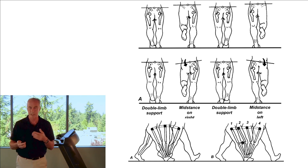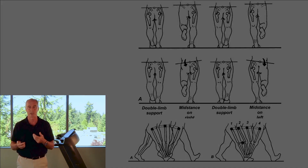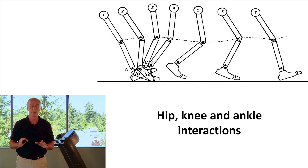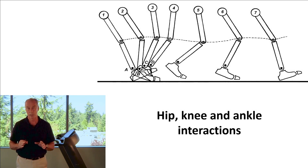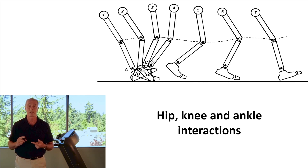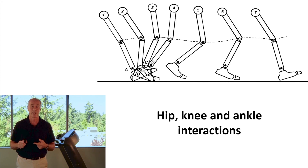So pelvic rotation in the frontal plane and knee flexion in the sagittal plane are very important. From Inman, Ralston, and Todd's book on human walking, ankle kinematics also alter the progression of the center of mass.